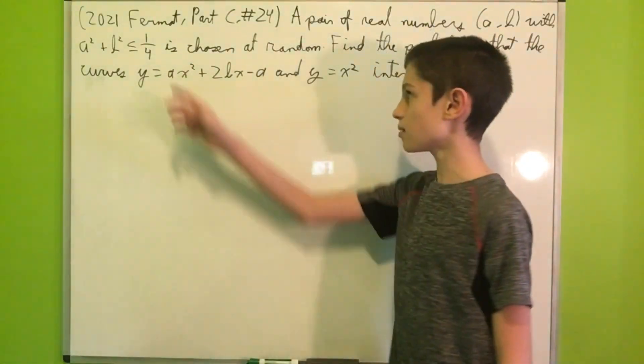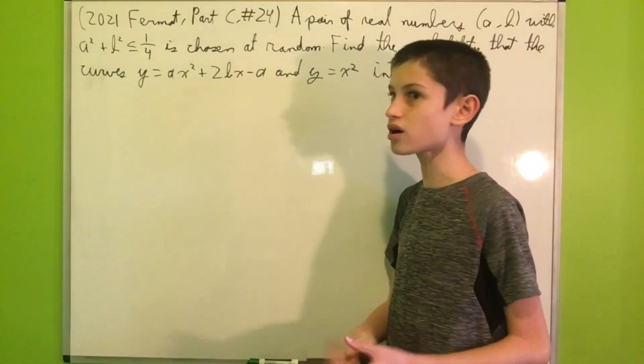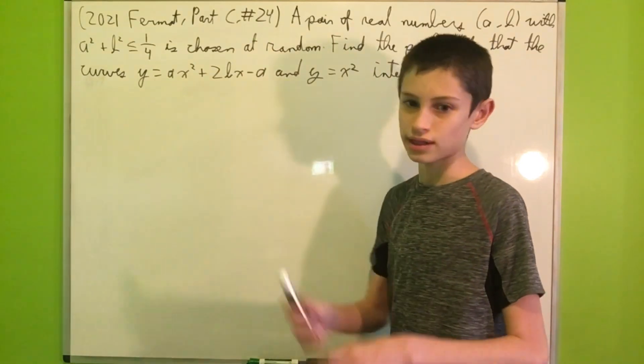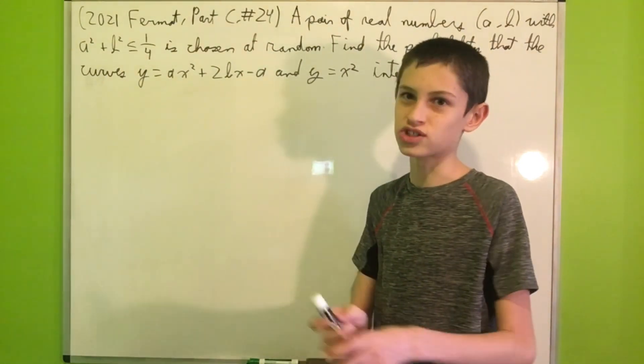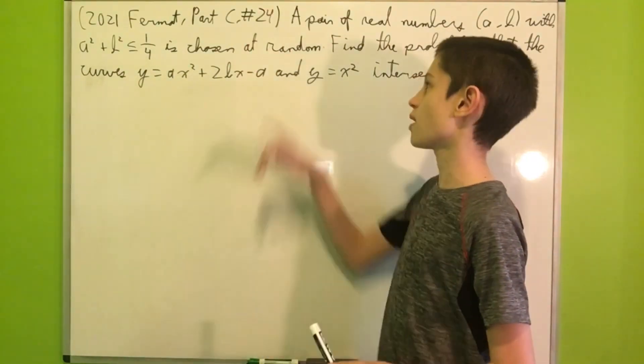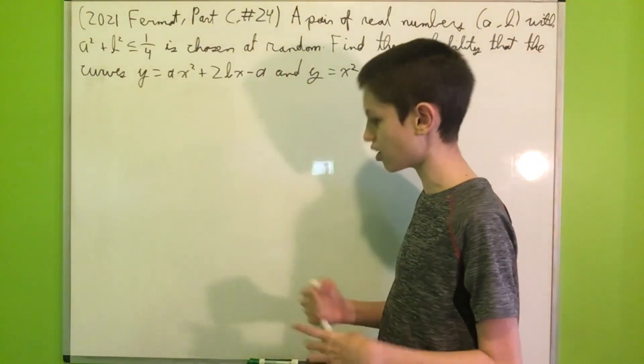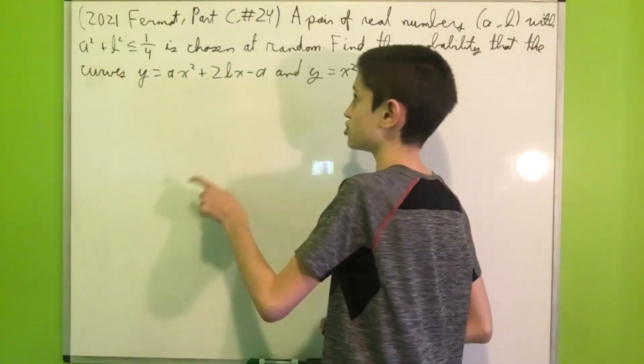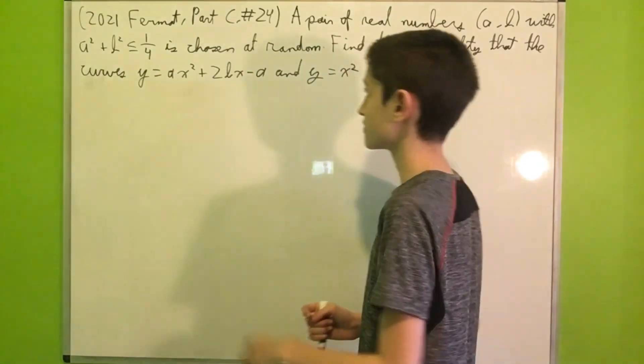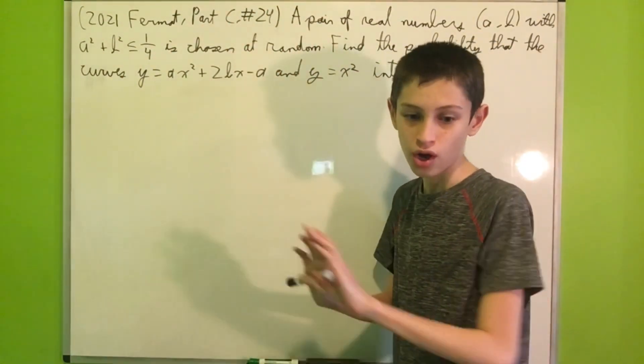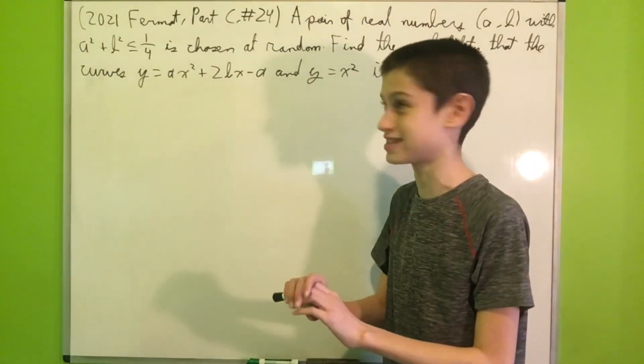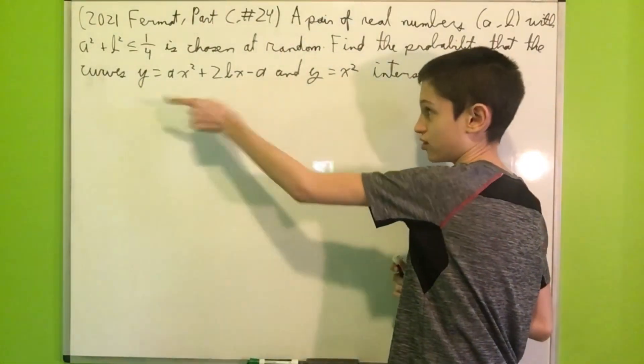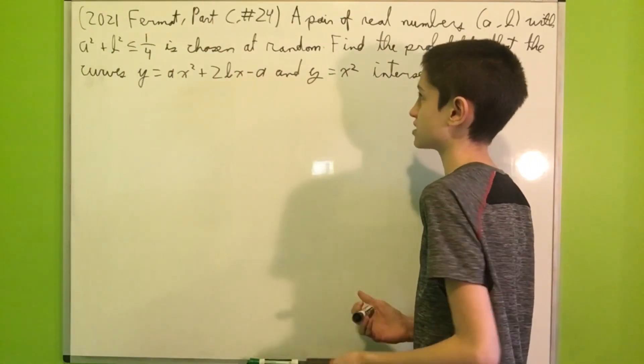Let's jump into today's problem. So this problem is from the 2021 Fermat contest, which is actually a contest that we have here in Canada, and it was question 24 from part C. There were three parts with 24 questions total. This was the second to last question on the test. We have a pair of real numbers (a, b) with a squared plus b squared being less than or equal to 1/4, and that pair is chosen at random. We want to find the probability that the curves y = ax² + 2bx - a and y = x² intersect.